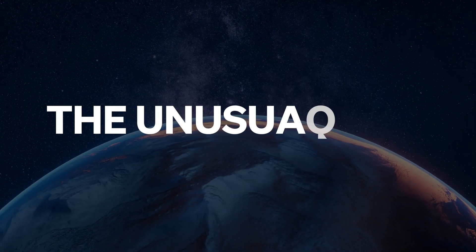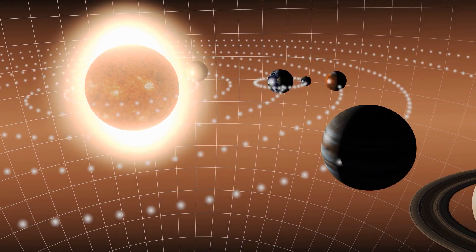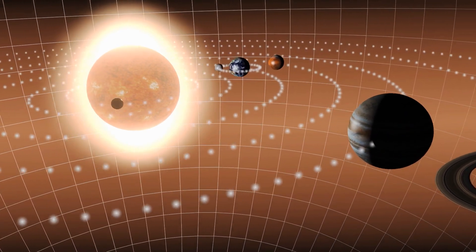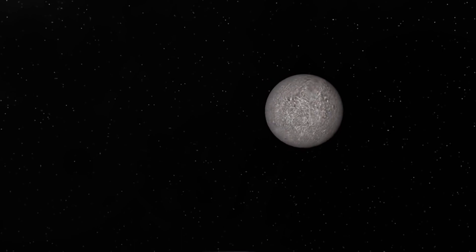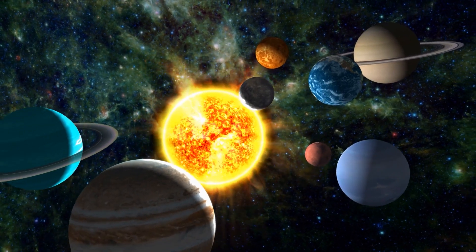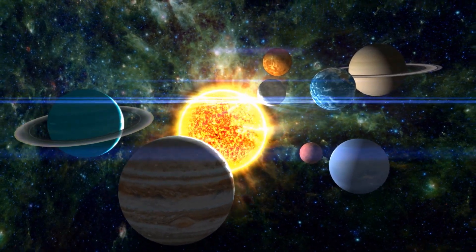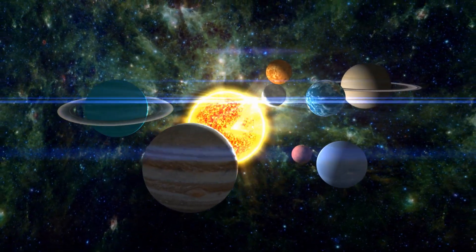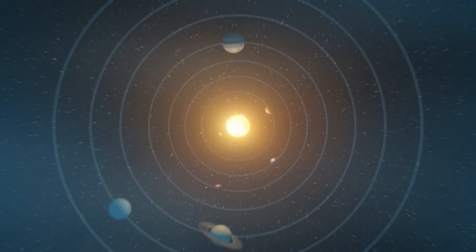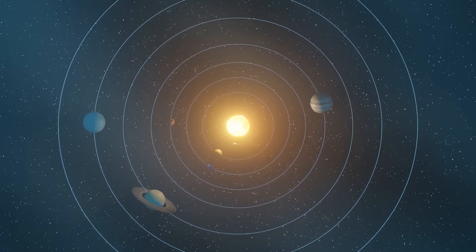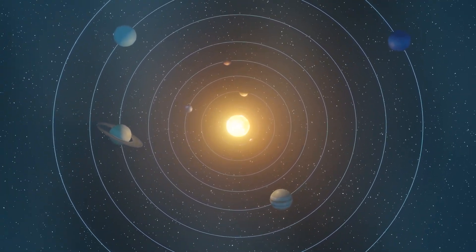The unusual spin. Mercury's unique rotation is a fascinating aspect of this enigmatic planet. Unlike most celestial bodies in our solar system, Mercury exhibits an exceptionally slow rotation when compared to its orbit around the sun. When a day on Earth takes approximately 24 hours, Mercury's rotation, or its day, is much longer, lasting about 59 Earth days.